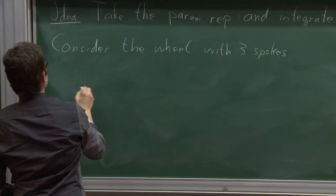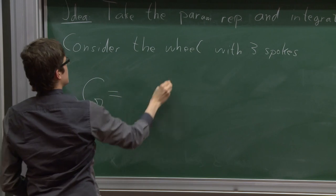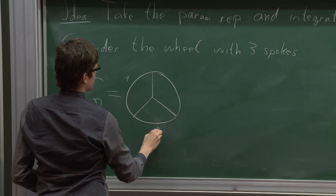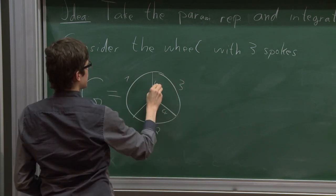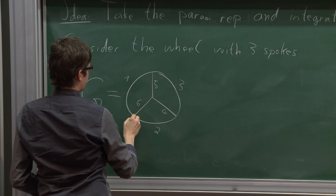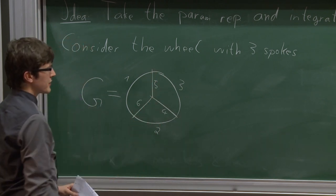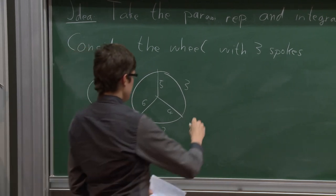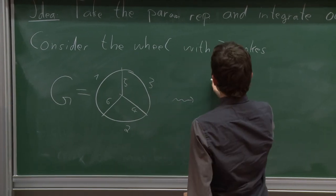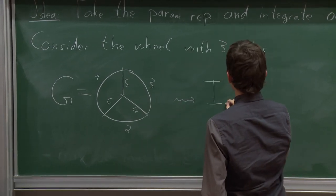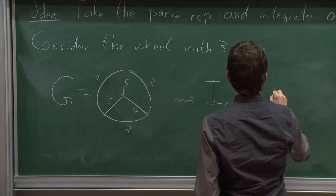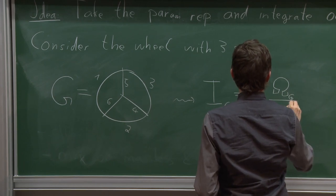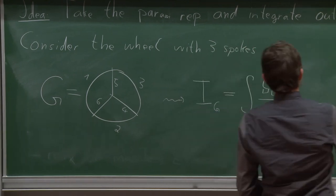The wheel with three spokes was the first non-trivial example that Francis mentioned in his outlook. It is this graph — a wheel with three spokes. Let's call these edges 1, 2, 3, 4, 5, 6. You can think of it as a graph in phi-to-the-4 theory with four external legs.